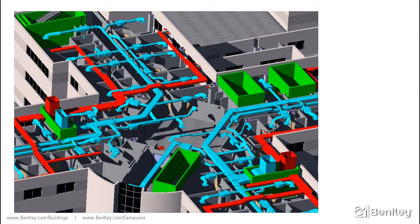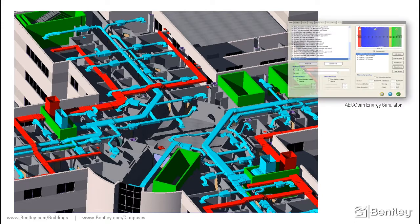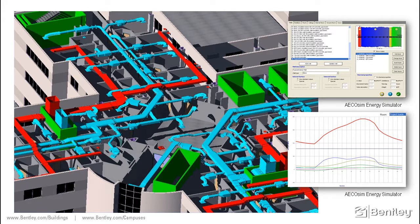The mechanical engineer, using EcoSim Building Designer, can place major equipment, route supply and return ducts, and place dampers and diffusers for a complete air distribution system. Referencing the architectural and structural model, the engineer can coordinate equipment clearances and optimize the interstitial space between the floors.